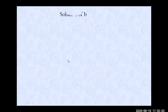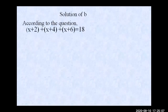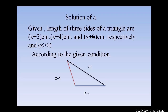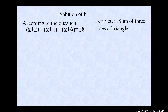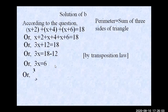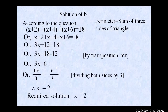Solution part (b): The three sides are (x + 2), (x + 4), and (x + 6) cm, and the perimeter is 18 cm. Since perimeter equals the sum of three sides: (x + 2) + (x + 4) + (x + 6) = 18. Removing brackets: 3x + 12 = 18. By transposition: 3x = 18 − 12 = 6. Dividing both sides by 3: x = 2. The required solution is x = 2.